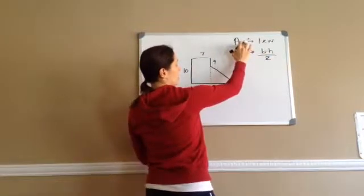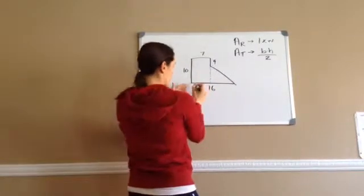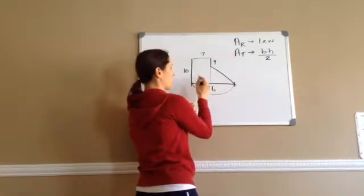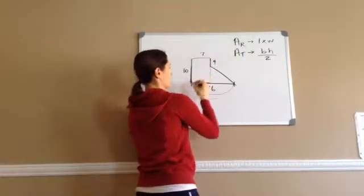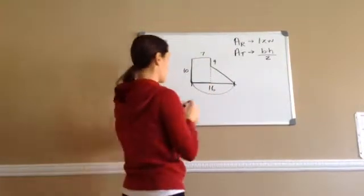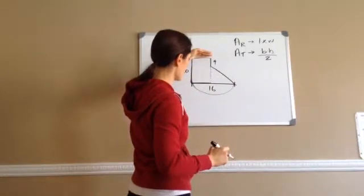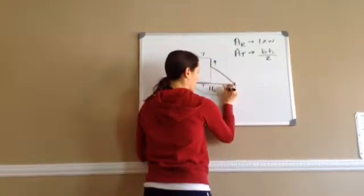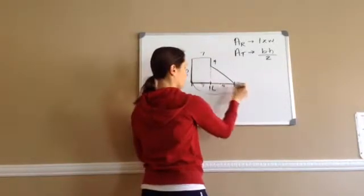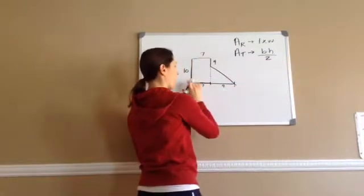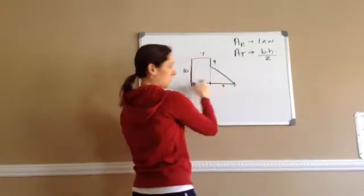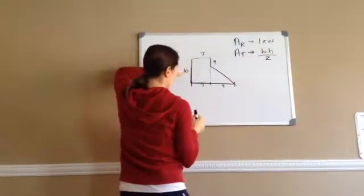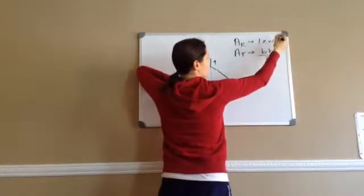We're going to look at the rectangle first. Do I see a length? Here's where it gets tricky, because from here to here is 16, but I don't need that whole 16. I want one of these sides and one of these sides — length times width. Do I know what this portion of the side is? Yes — 7. So if this is 7 and this full thing is 16, then this would have to be 9. I can erase the 16 because once we broke it up into pieces, we needed to break up the 16. So for the rectangle it's 10 times 7.